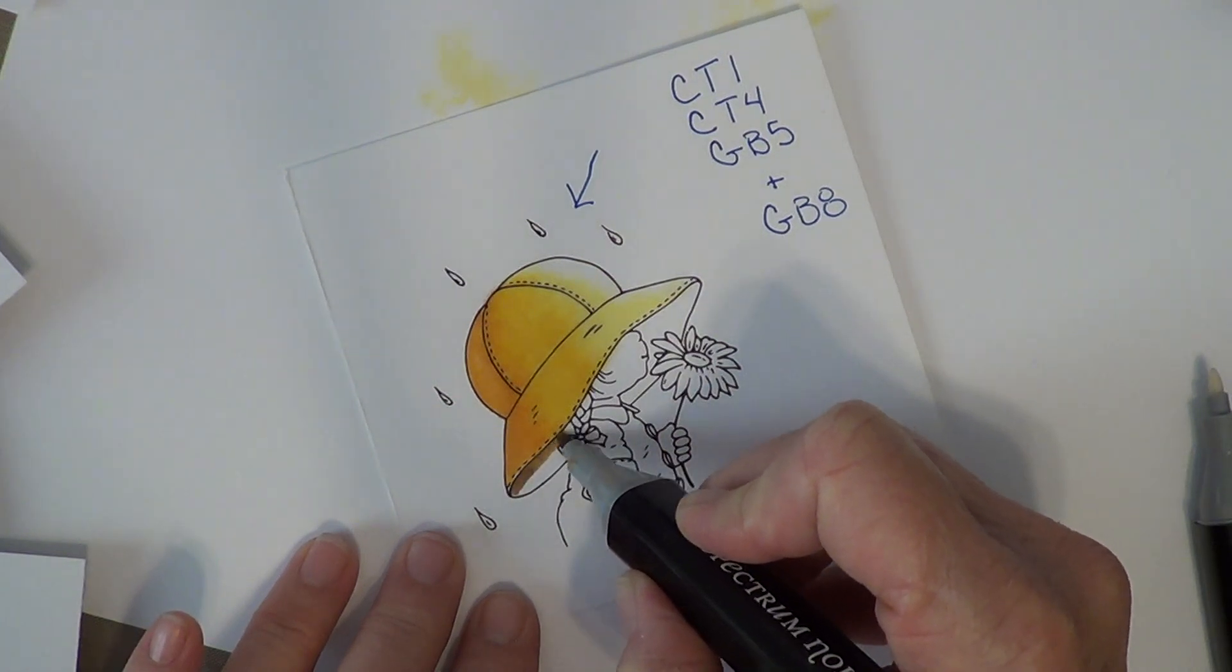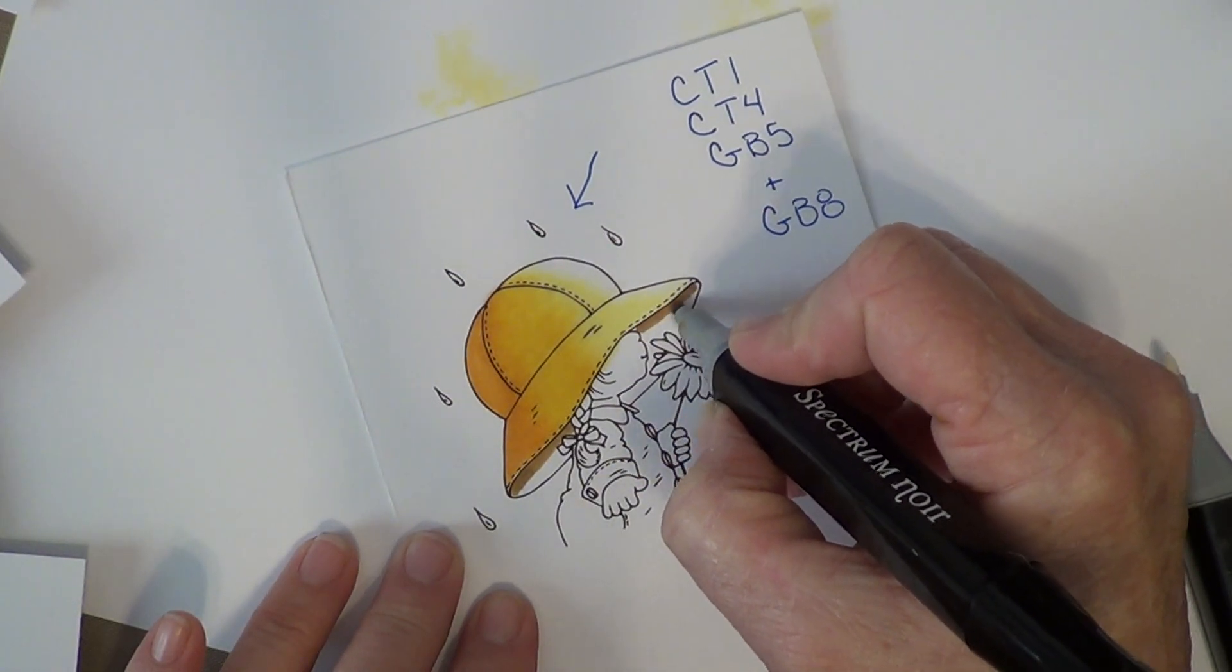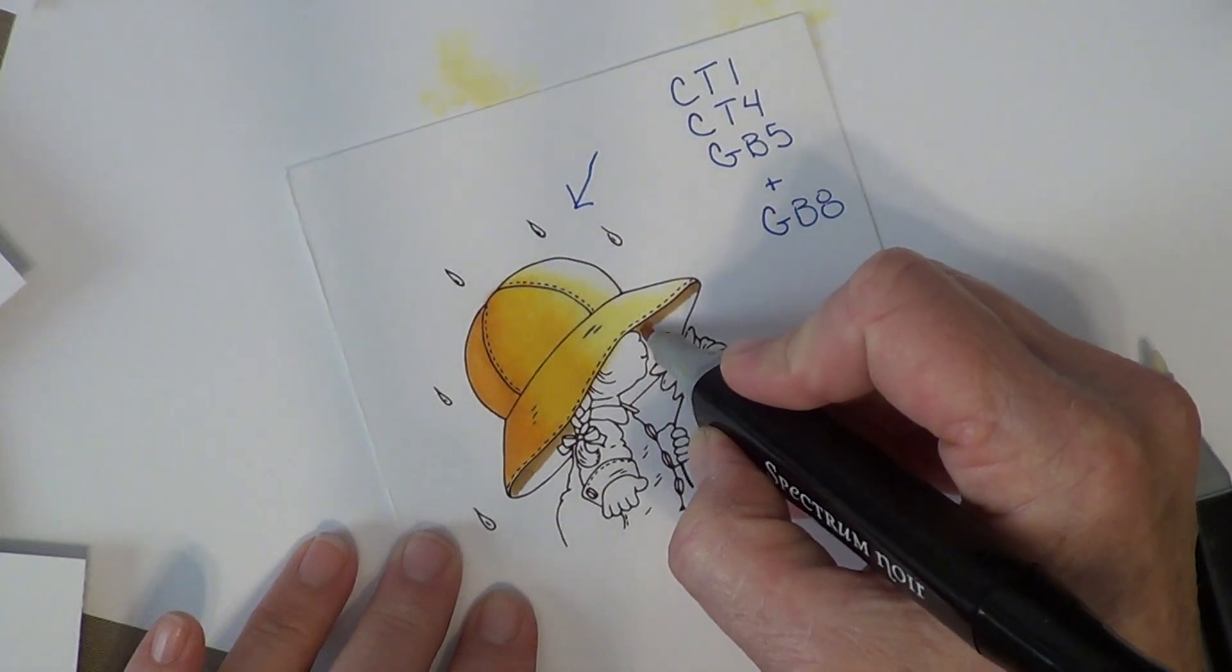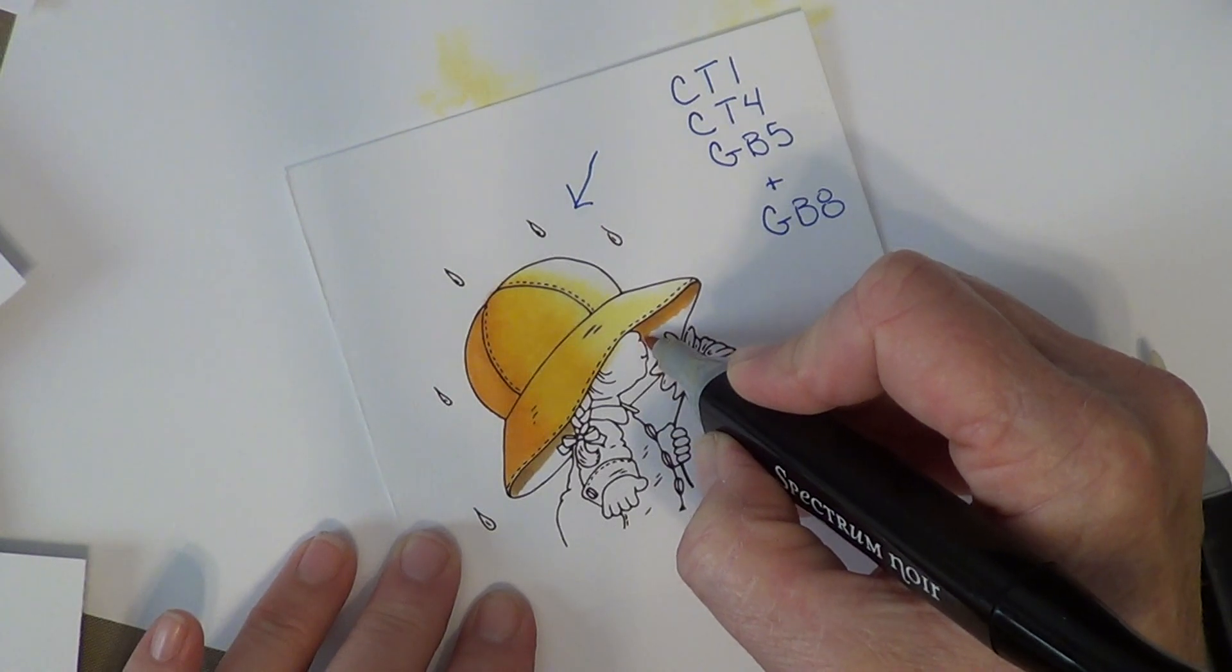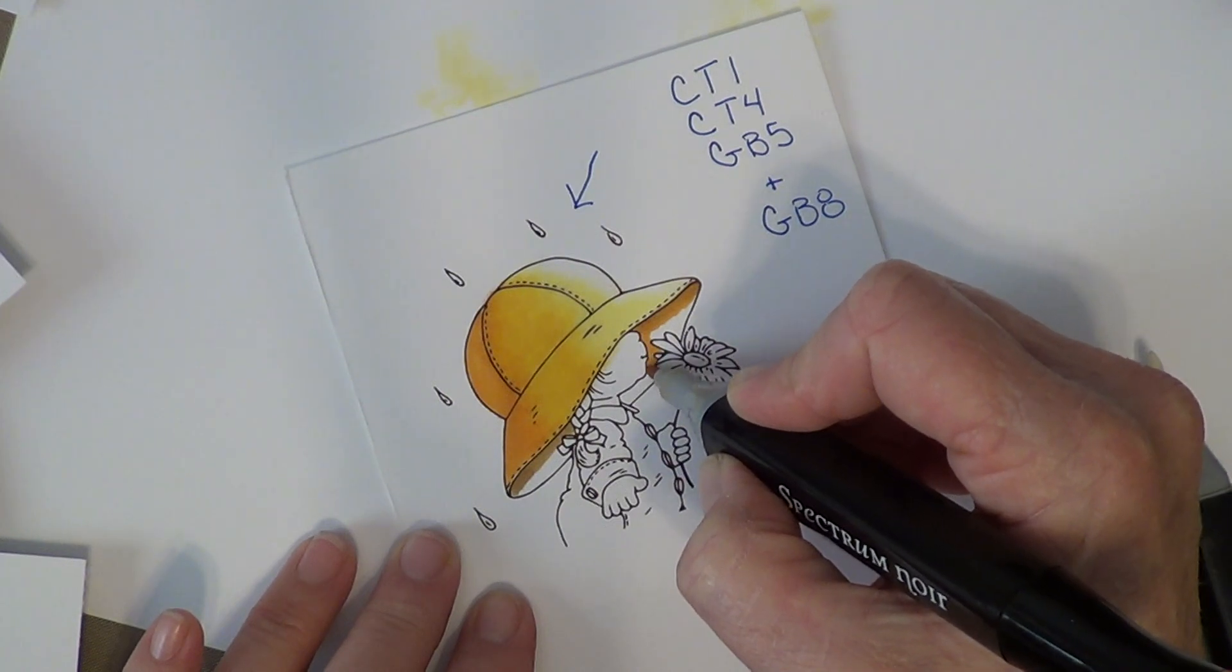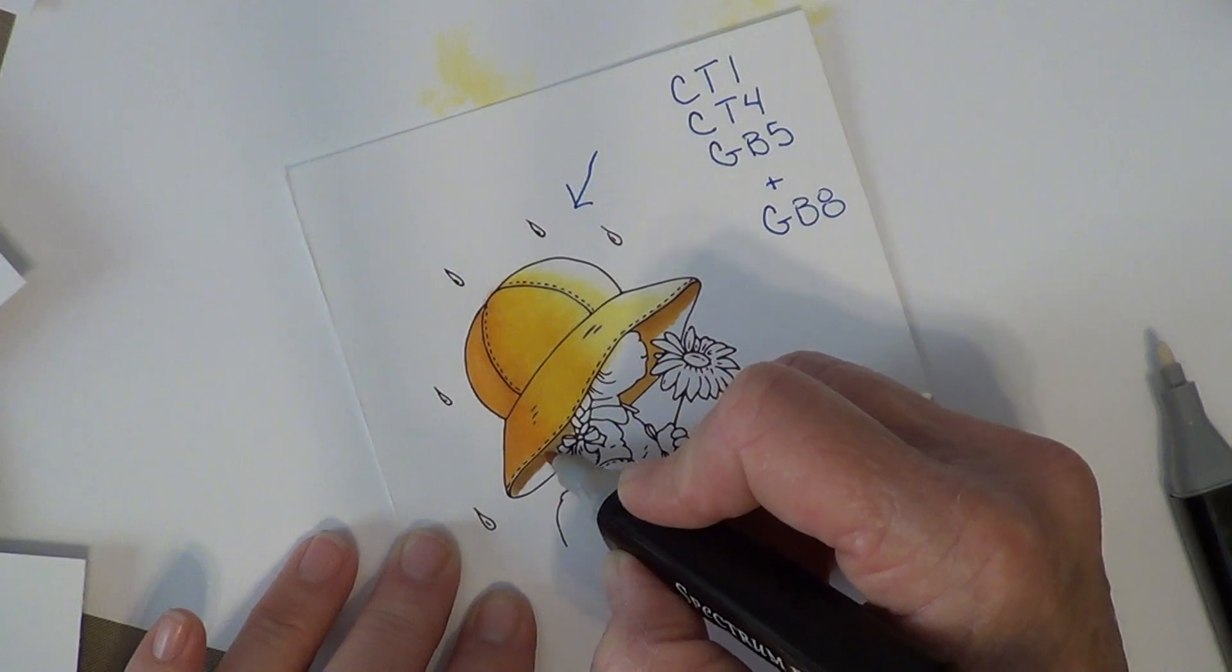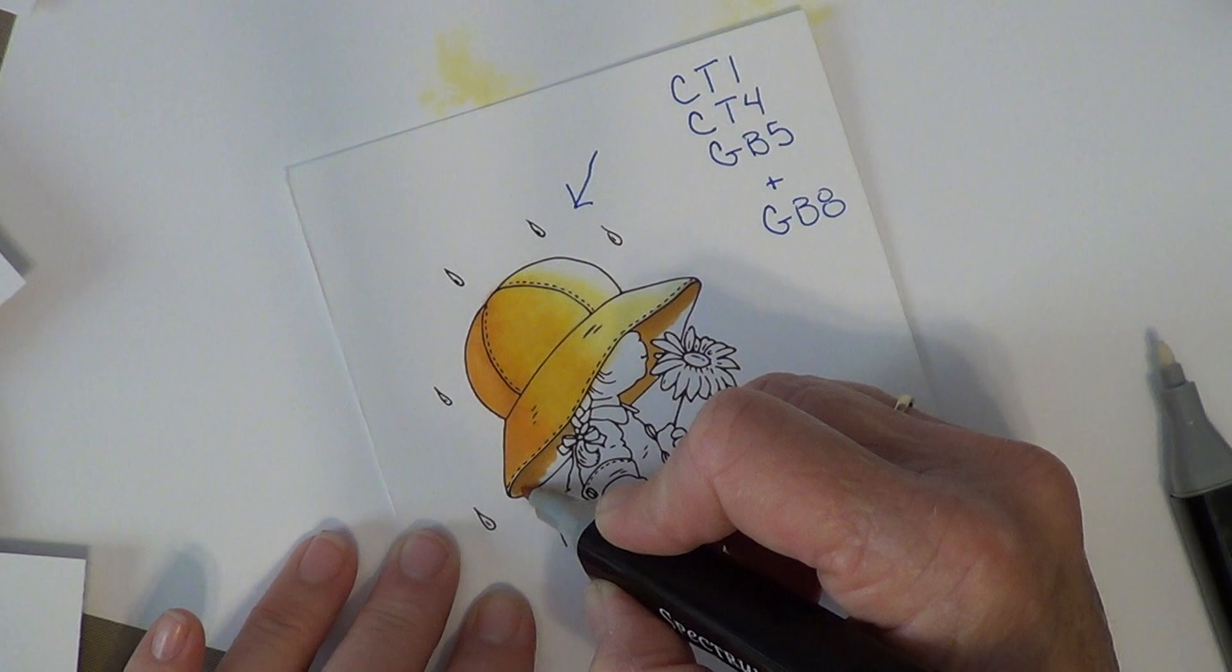So here I'm going to take GB8 and put it right underneath where the two layers meet together. Now I'm going to take GB5 and soften that. All I added that GB8 in there for was just a little bit darker color to add a bit of shading. Some colors I'll add a little bit of gray doing that, but with yellow I prefer to put a brown. So I pull it down a little bit and the same back here.